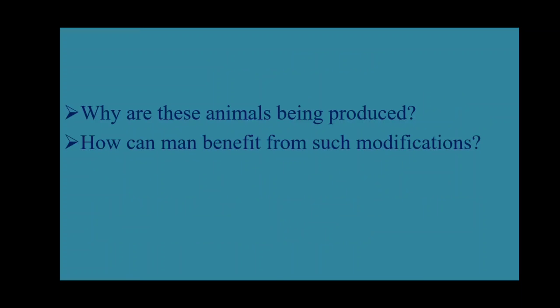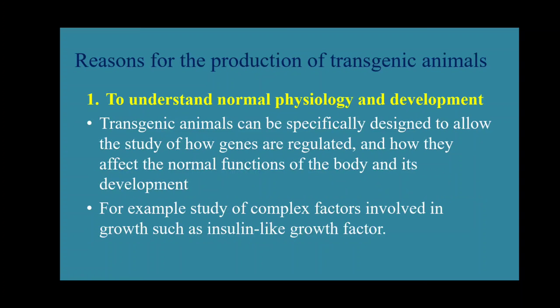A question arises: why are these animals being produced? What is the use of that animal, and how can humans benefit from such modification? Let us understand by taking some examples. The first reason is to understand normal physiology and development of any gene. Transgenic animals can be specifically designed to allow the study of how genes are regulated and how they affect the normal function of the body and its development.